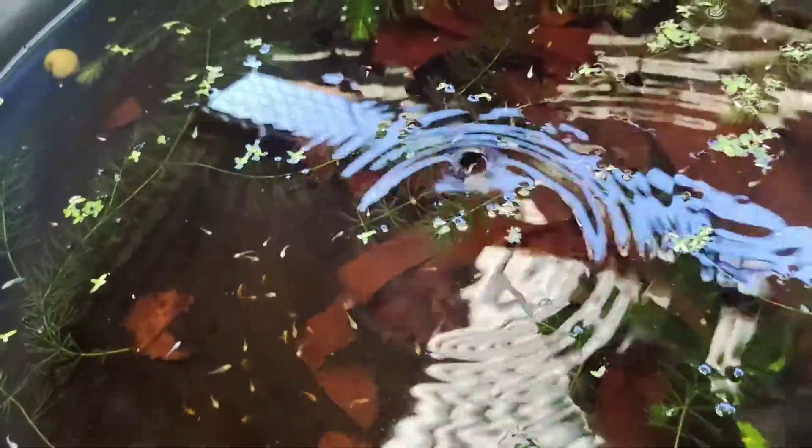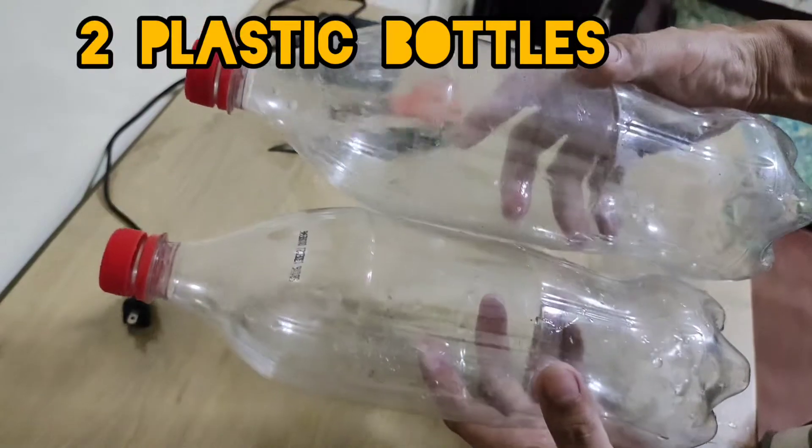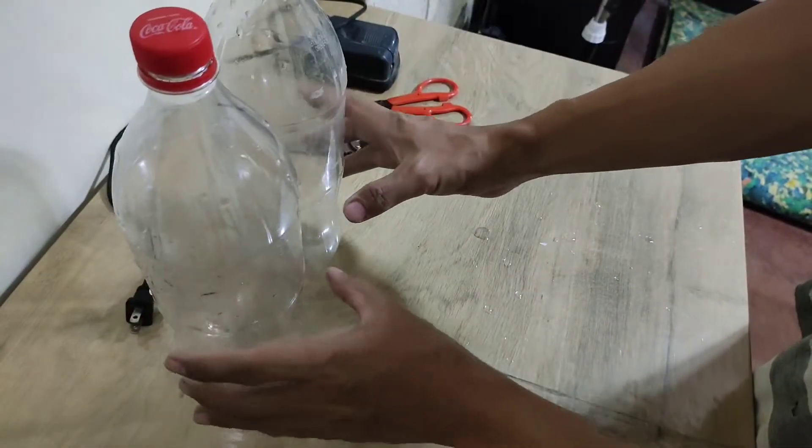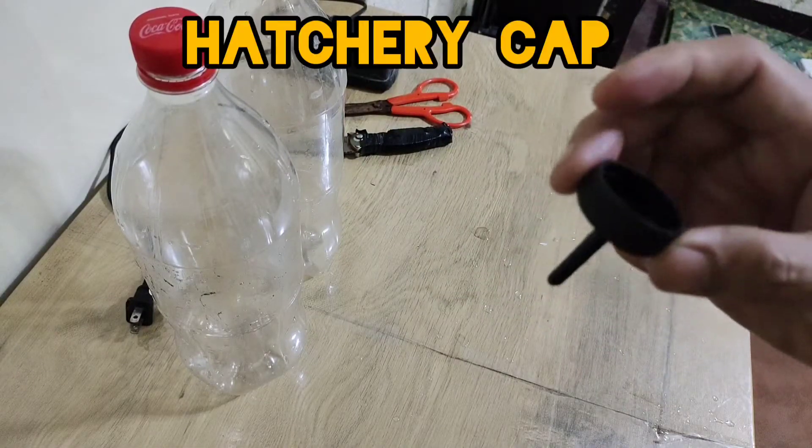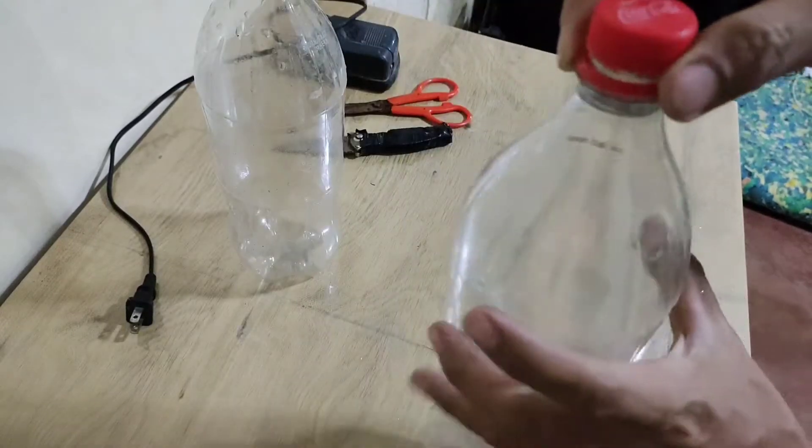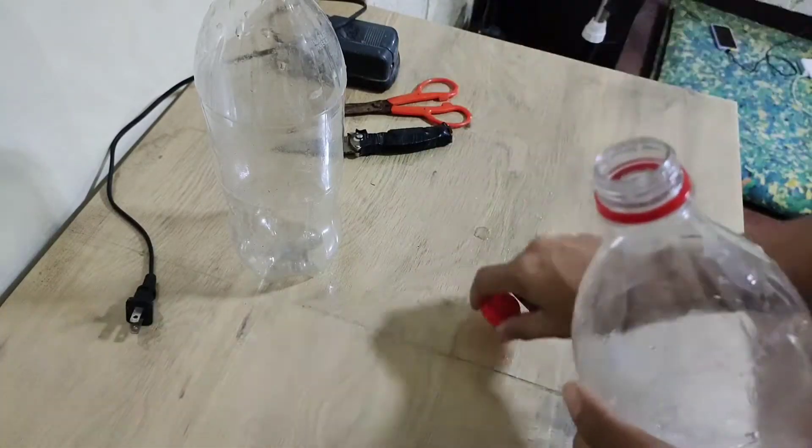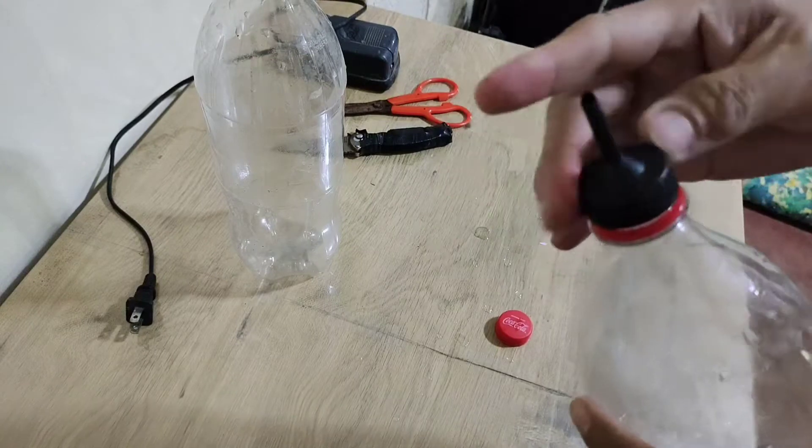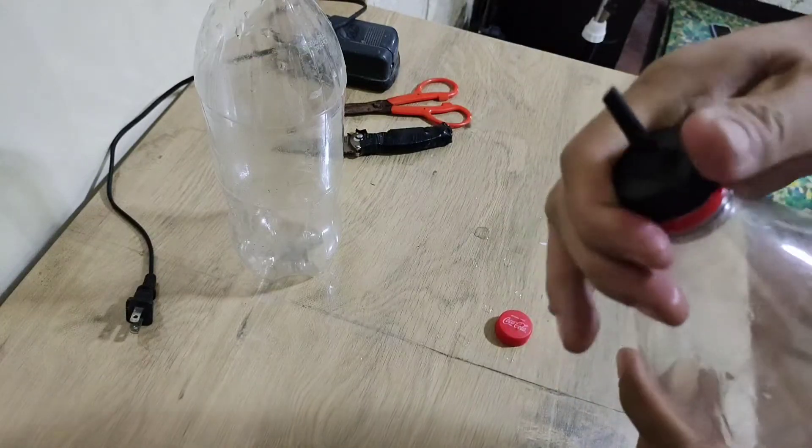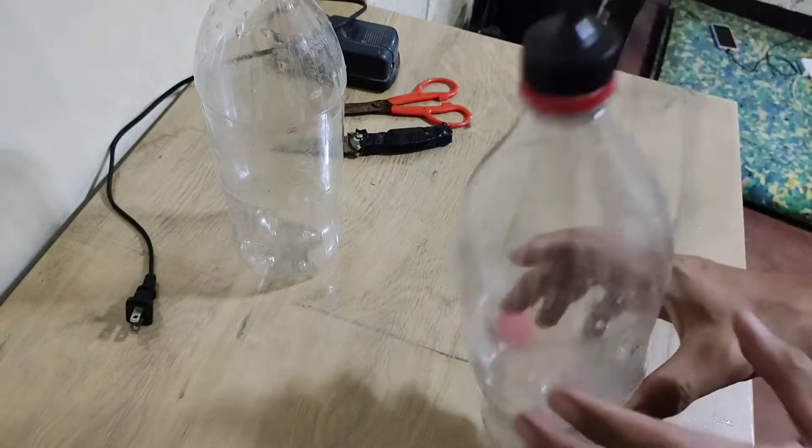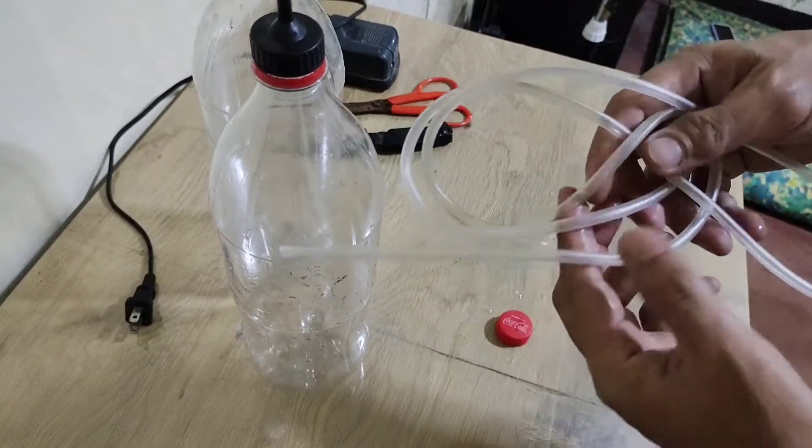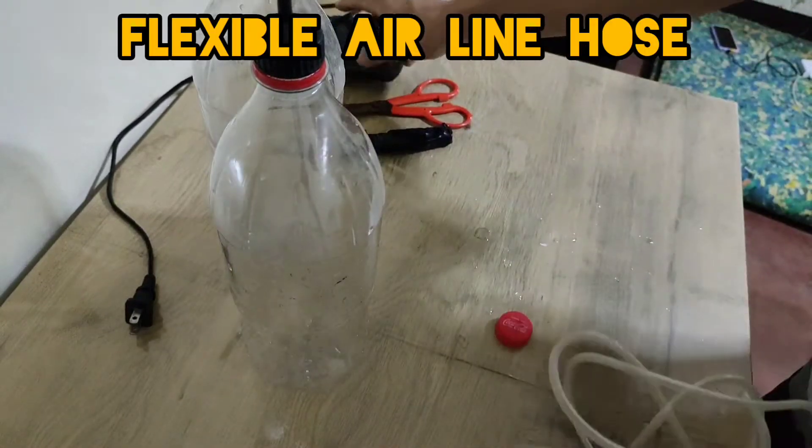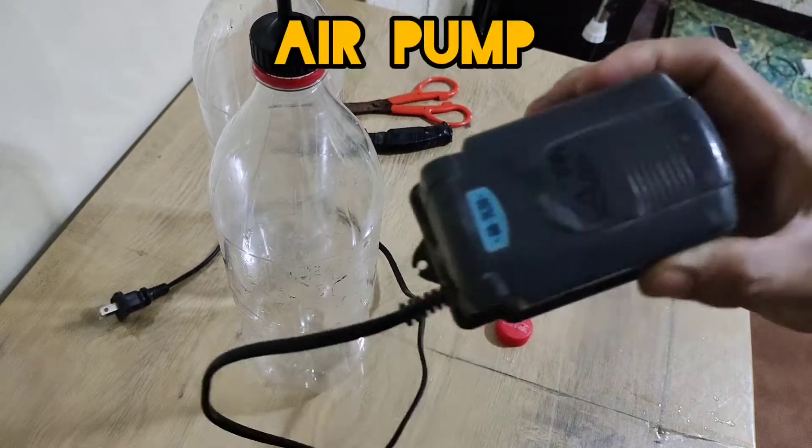First, we need these two plastic bottles. In this case, I have two 1.5-liter bottles and this special hatchery cap which I just bought online. Don't worry if you don't have this hatchery cap - I will show you later how to use the original bottle cap to make a hatchery. Of course, we also need this flexible airline hose and our air pump.